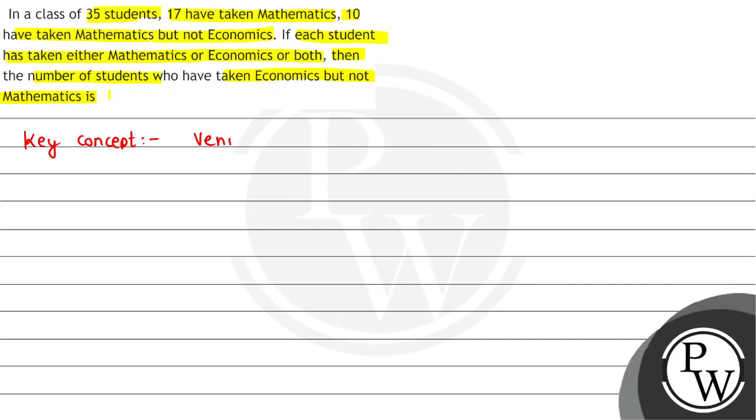So what is a Venn diagram basically? Venn diagram is a pictorial representation of our sets. So this is set A, this is set B, and this is A intersection B.